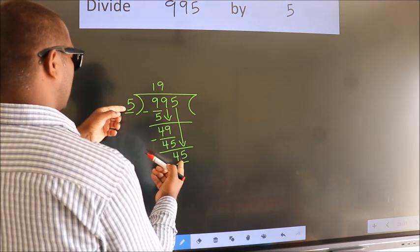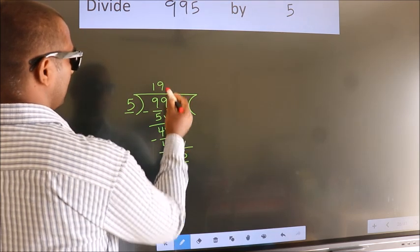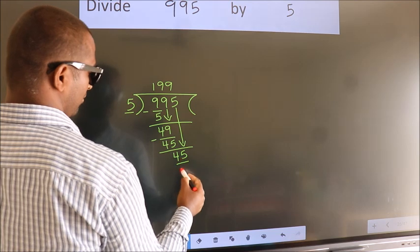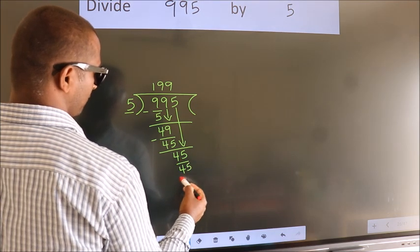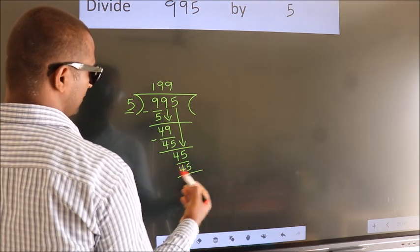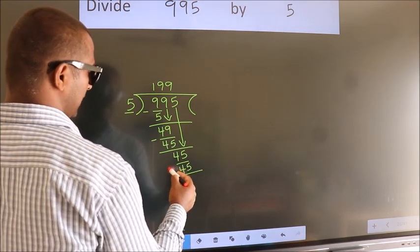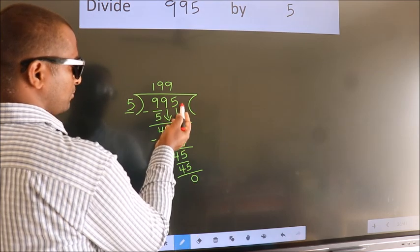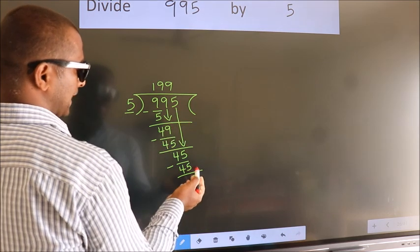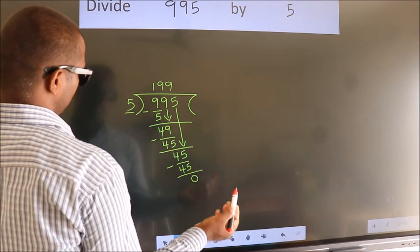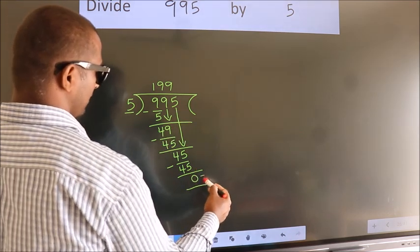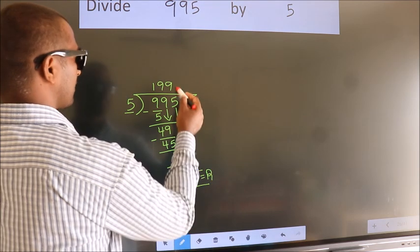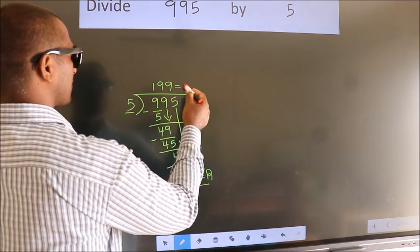When do we get 45 in the 5-times table? 5 nines is 45. Now we subtract — we get 0. There are no more numbers to bring down, so we stop here. This is our remainder, and this is our quotient.